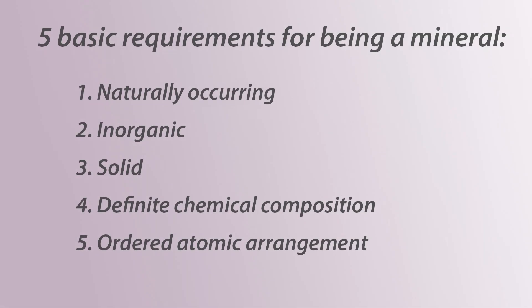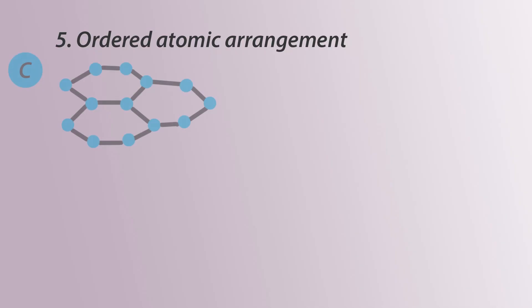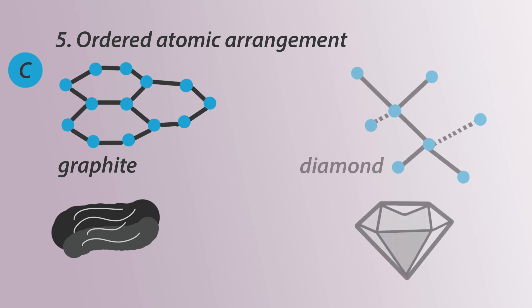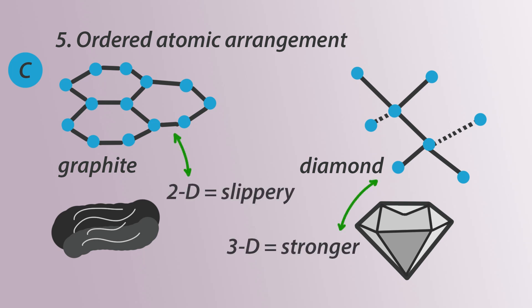The fifth requirement is an ordered atomic arrangement. This means the atoms making up the mineral must be arranged in a specific way to be classified as that mineral. This also means two different minerals can be made from the same element, just arranged differently. For example, graphite and diamond — both native elements — are both made of only carbon. The only difference is how those carbons are arranged: in sheets for graphite, and in a tetrahedral form for diamond.